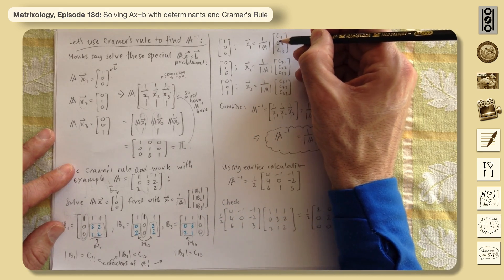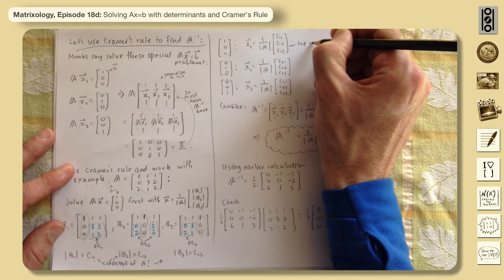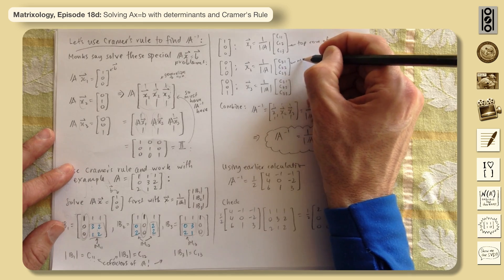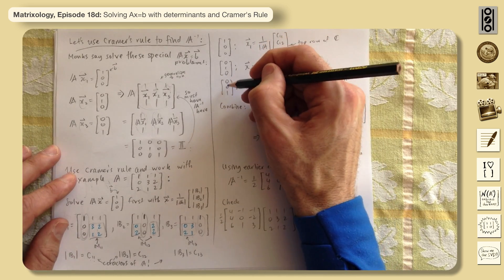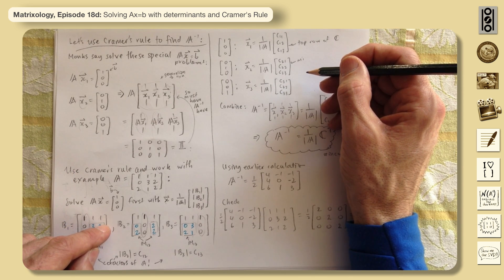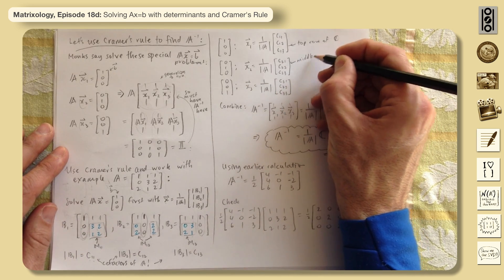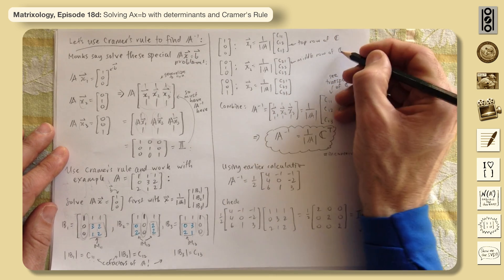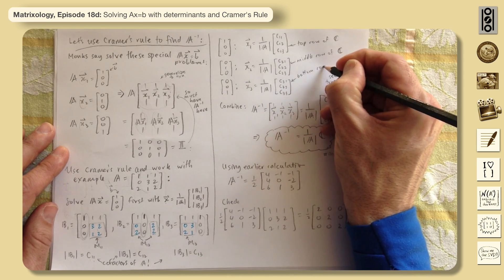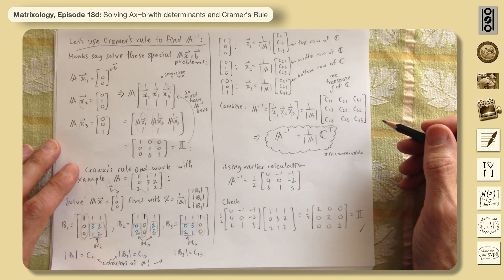Similarly, for b = [0,1,0] we get cofactors C21, C22, C23 — the middle row of C — and for b = [0,0,1] we get C31, C32, C33 — the bottom row of C. So each solution vector is a row of the cofactor matrix divided by det(A).